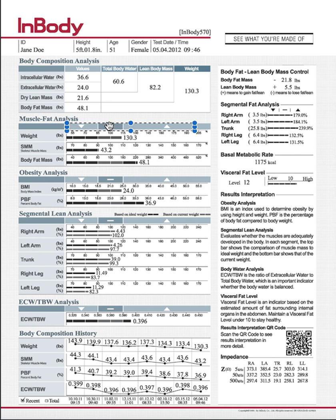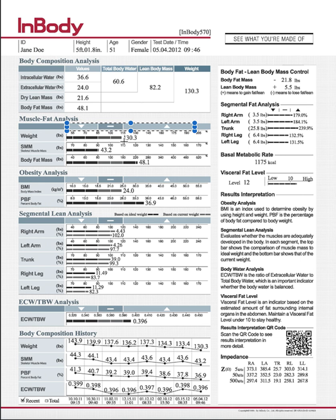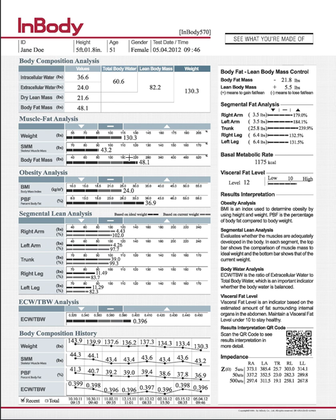These are all averages based on typical Americans. She is in the healthy or ideal range for her weight, but her muscle mass is really on the low end of that ideal range, so we want to bring her muscle mass up. She's also a little high on body fat mass, so we want to bring that down as well.